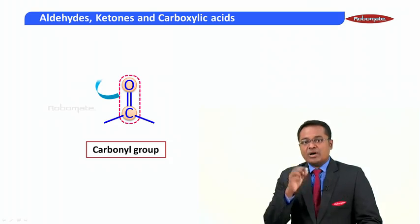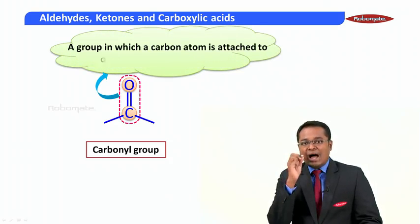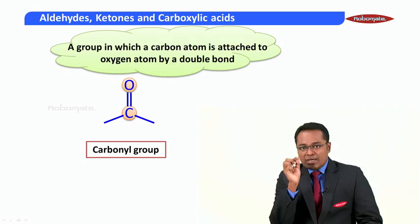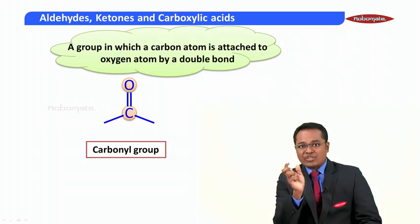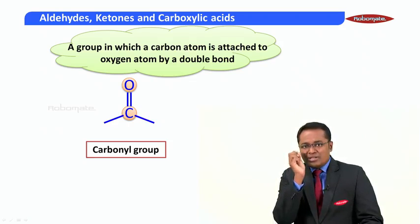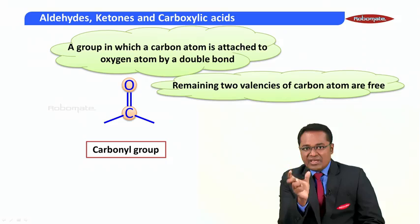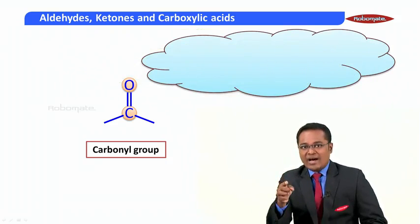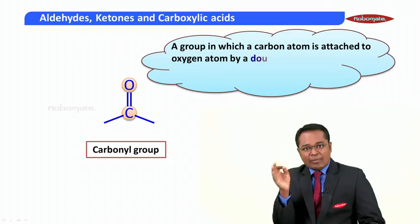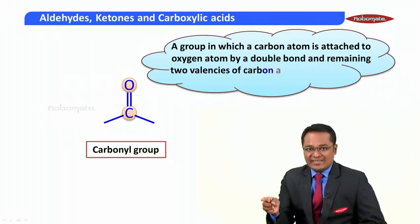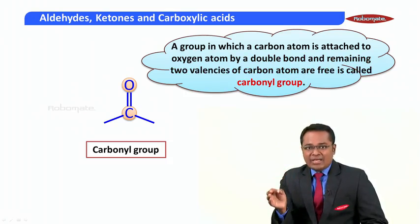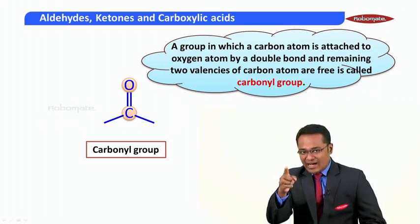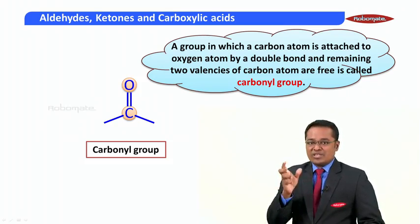A carbon atom is attached to an oxygen by a double bond. Additionally, there are two single bonds attached to the carbon atom, meaning two valences are free. Combining both these points: a group in which a carbon atom is attached to oxygen by a double bond and the remaining two valences of the carbon atom are free is known as a carbonyl group.